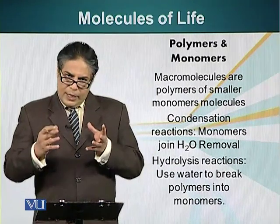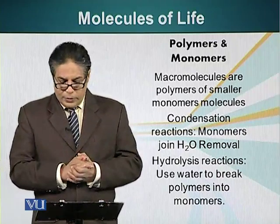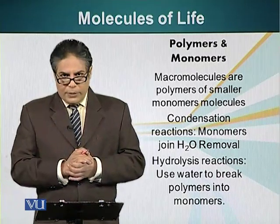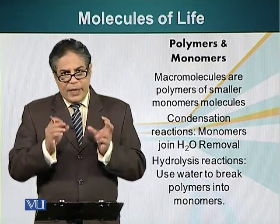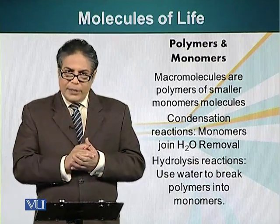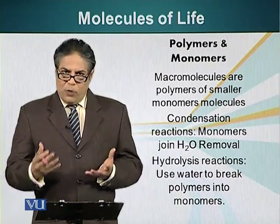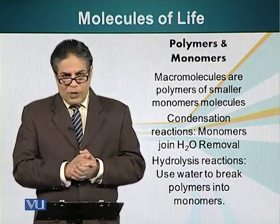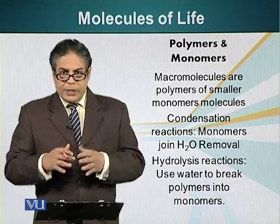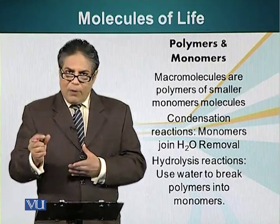Let's discuss how these smaller building blocks form larger molecules. Larger molecules are also called polymers. Polymers basically means something with many, many units, while monomer means a single unit. In the cell, almost all large molecules are actually polymers — they are made up of smaller units. Just as our houses are made of bricks, these larger molecules are made up of smaller units.